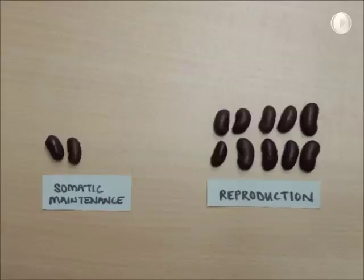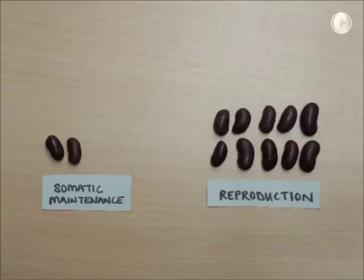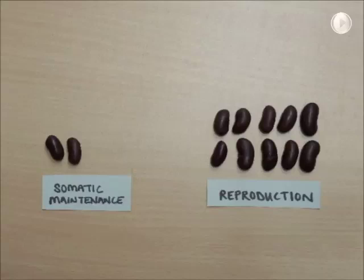Think of the kidney beans in this animation as nutritional resources. The adaptive resource reallocation hypothesis explains the effects of food availability on survival and reproduction like this: when an animal is fully fed or has lots of resources, it maximizes its fitness by investing most of what it has into reproduction, with the result that it essentially neglects somatic or body maintenance and ages faster.